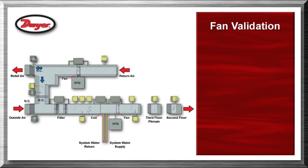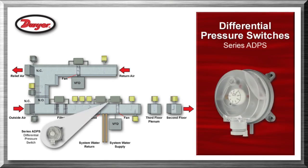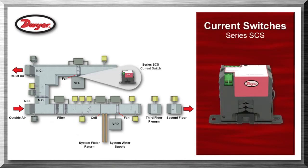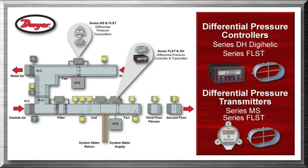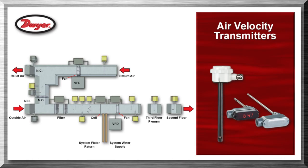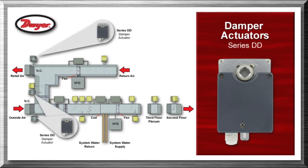Dwyer offers several products that can be used for fan validation, proving the fan is operating. Differential pressure switches series ADPS are used by monitoring the differential pressure between upstream and downstream of the fan. Current switches series SCS are used by monitoring the current usage of the fan. Differential pressure controllers series DH Digihelic or differential pressure transmitters series MS are used with an airflow station, such as the series FLST, to monitor the airflow rate exiting the fan. Air velocity transmitters series 641 or series AVU are used to monitor the airflow rate exiting the fan. Damper actuators series DD are used to open and close dampers to change the airflow through the air handler.